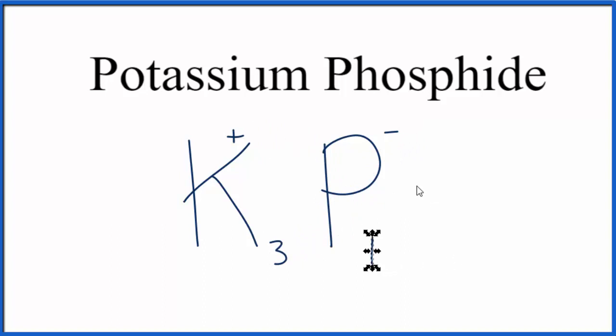Of course, we don't write 1, so we can get rid of that, and we can get rid of the charges as well, and we have K3P as the formula for potassium phosphide. Same thing as we got before. This is Dr. B with the chemical formula for potassium phosphide, K3P, and thanks for watching.